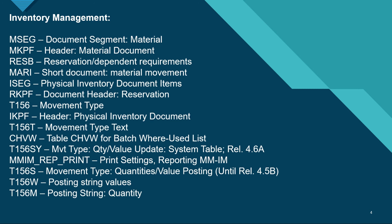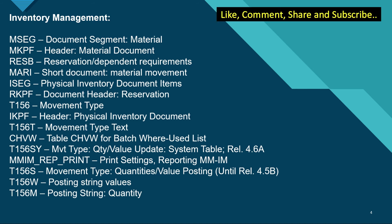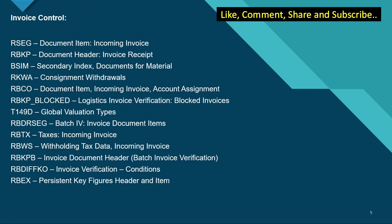ISG is the physical inventory document items. RKPF is the document header of reservation. For movement type we have T156. IKPF is the header of physical inventory document. T156T has the texts with the movement type. CHVW is the table for batch where-used list. T165SY has movement type details. T156S is movement type with respect to quantities, and T156W and T156M have the posting strings data.